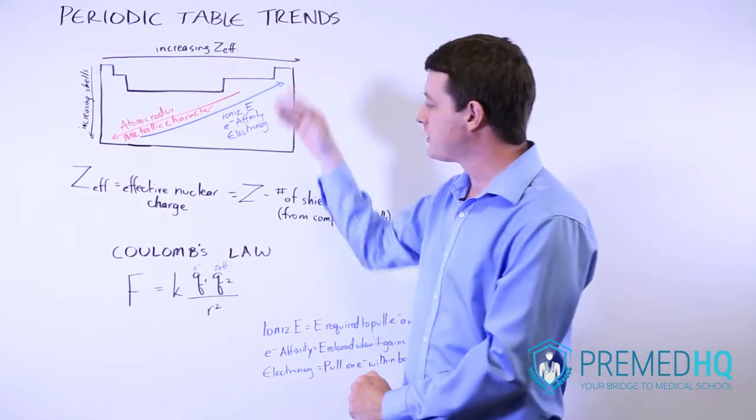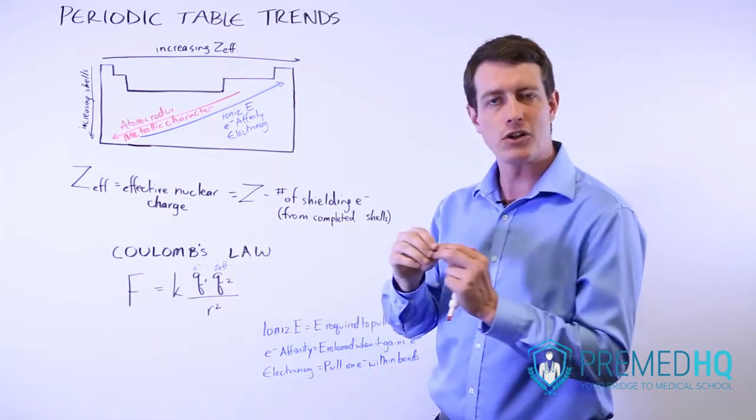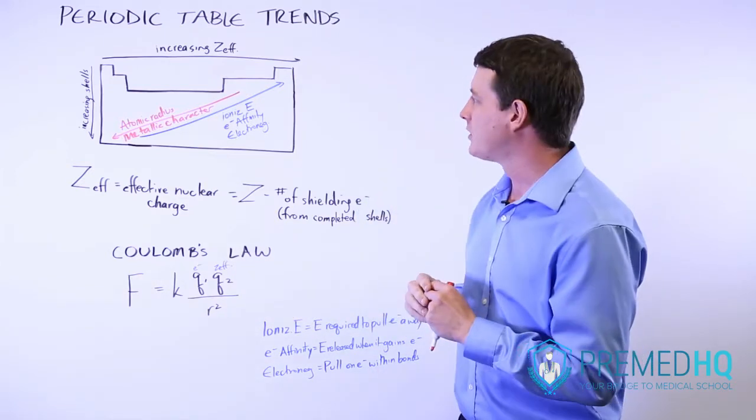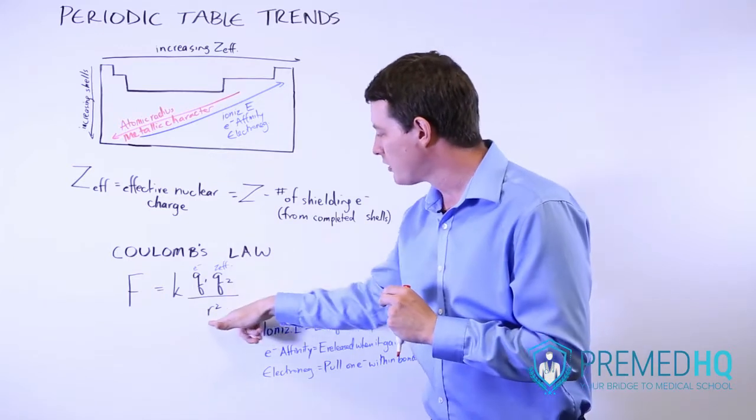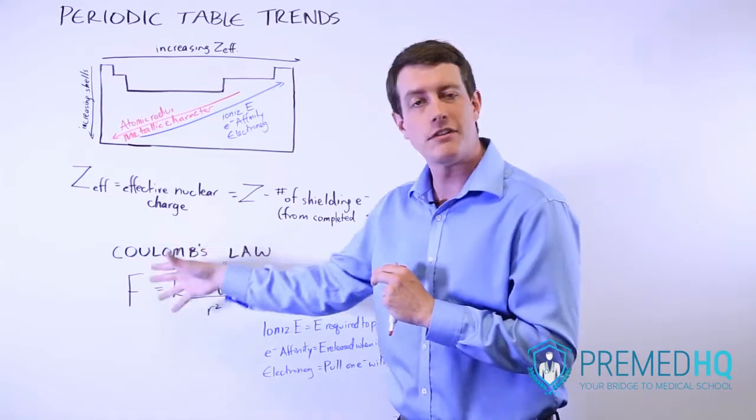And so notice that when you get up to the top right of the periodic table, you have a greater Z effective, so a larger numerator, and a smaller radius, a smaller distance between that nucleus and those valence electrons. And so that means that you have a smaller denominator. If this number is big and this number is small, you're going to have a large force.